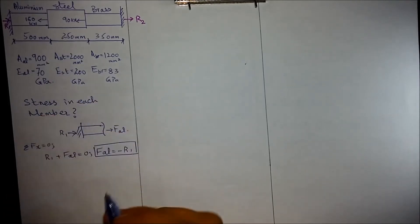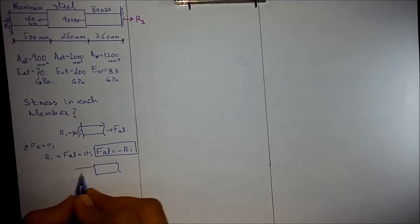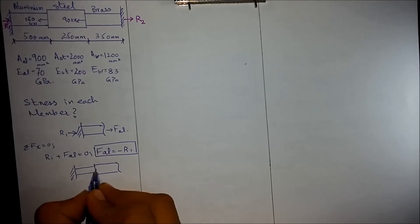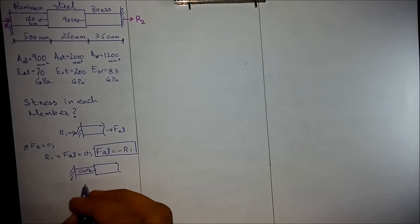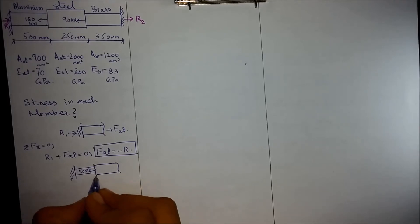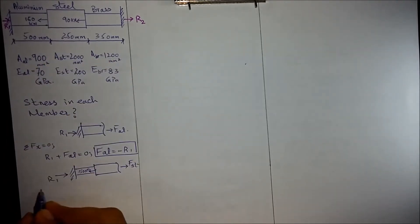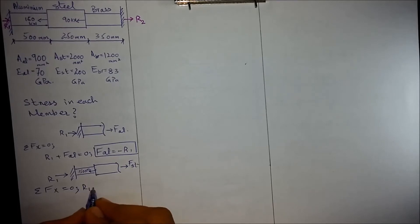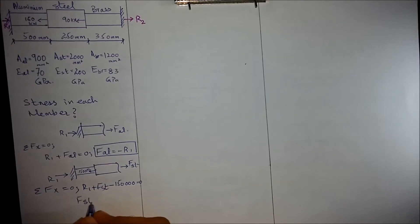For the steel member, we draw the free body diagram with a 150 kN load — that is 150,000 Newtons. This member is steel, with reaction R1. Upon summation of forces in the x-direction: R1 + F_steel − 150,000 = 0, so the force in steel equals minus R1 minus 150,000.